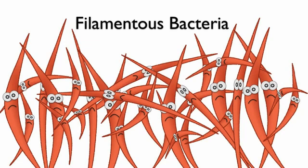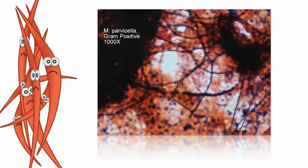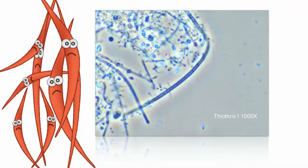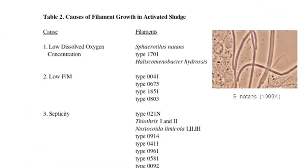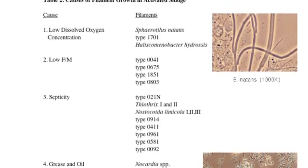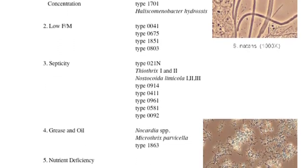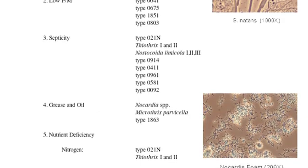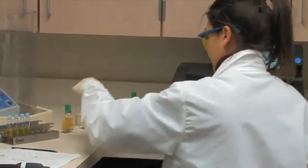Another important group to note are filamentous bacteria. These include Microthrix parvicella, Nocardia, Thiothrix, and a whole bunch of other characters classified as types such as Type 0914. As you would expect, filaments can also be used to identify conditions of sludge, and there is a whole suite of indicator tests available to identify which kind are present.